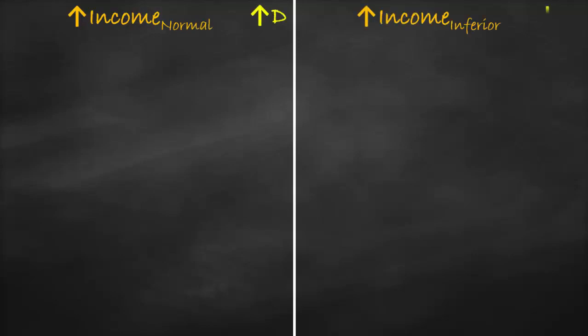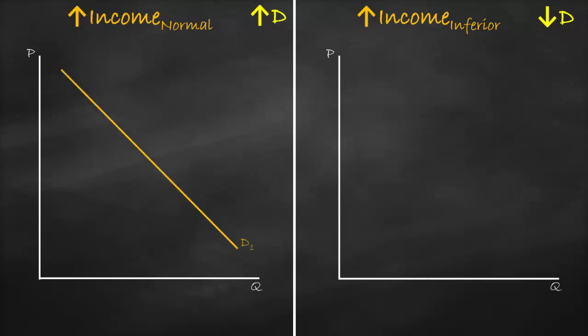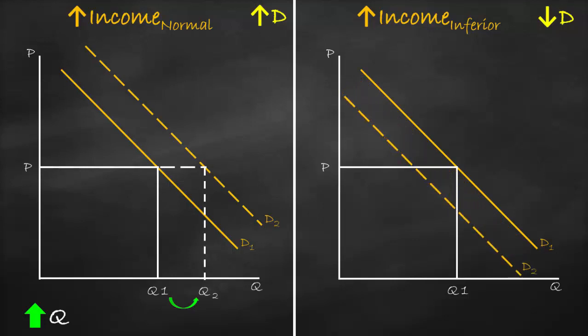Let's draw this. For a normal good, if income increases it results in higher demand — the demand curve shifts to the right. At the same price we get a higher quantity. For an inferior good, higher income results in lower demand — the demand curve shifts to the left. At the same price we get a lower quantity at Q2.